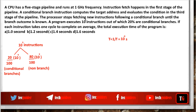If each instruction takes 1 cycle to complete on average, once the pipe is filled, all 10^9 instructions take 1 clock cycle. But because of the conditional branches, some instructions take extra cycles to complete. The non-branch instructions take exactly 1 cycle, but the instructions following conditional branches take some extra cycles in addition to the 1 cycle. How many extra cycles will be taken?